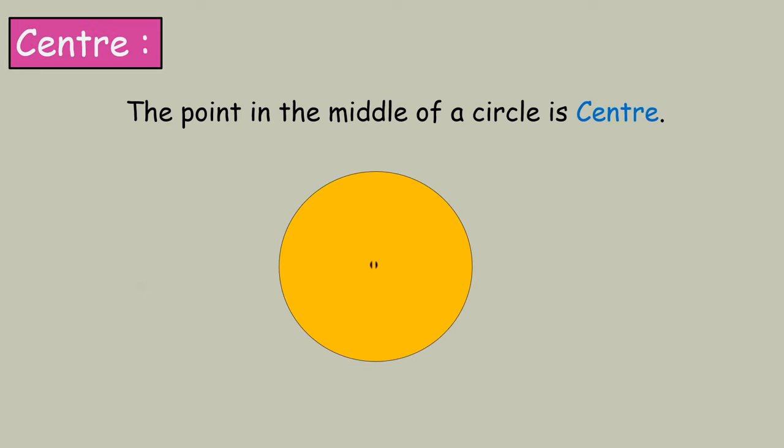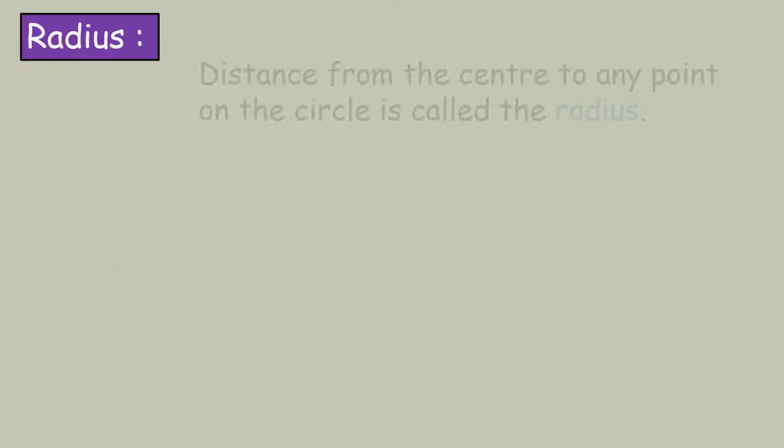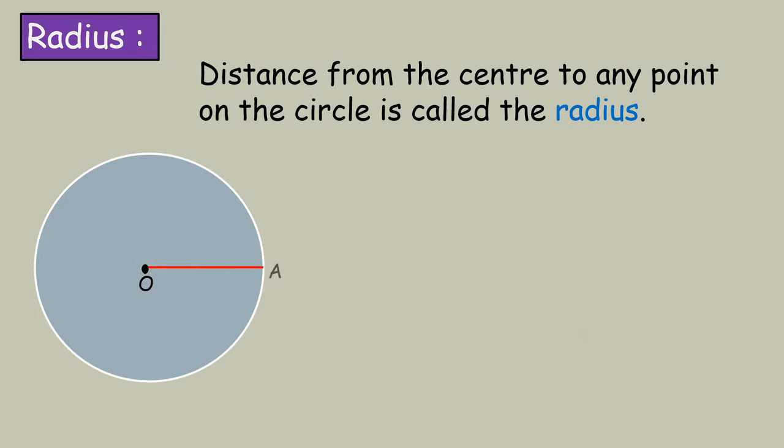Center is the point in the middle of a circle. Radius: distance from the center to any point on the circle is called the radius. In this circle, line segments OA, OB, and OP are the radii of the circle.